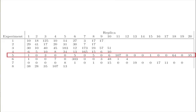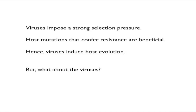Going back, this is why I claim this is the most interesting table in the history of biological sciences. That was the notion underlying what Luria and Delbrück found. To sum up: viruses impose a strong selective pressure, host mutations that confer resistance are beneficial, and therefore viruses really induce evolution.